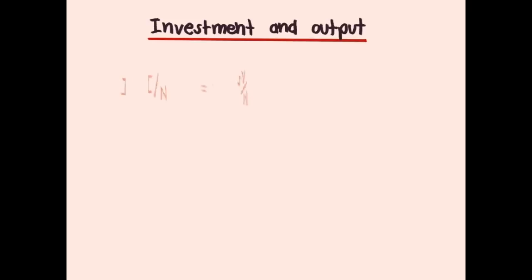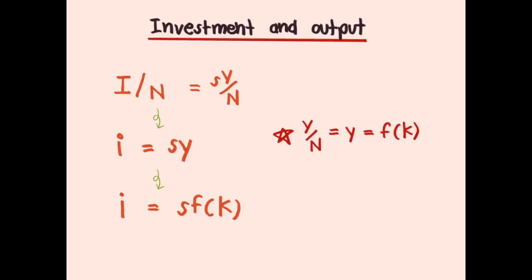Investment and output also need to change into per-worker form. Therefore, we will divide by N both sides. Then capital I will change to small i as investment per worker, and capital Y will change to small y which represents output per worker. Next, small y also equals f(k), so investment per worker equals saving rate multiplied by f(k).